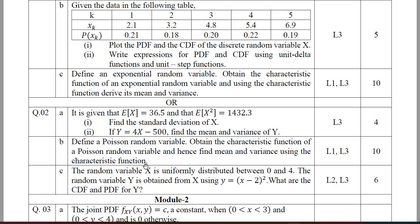All these problems are very simple compared to real mathematics, so you can easily answer them. For question 2C, the random variable X is uniformly distributed between 0 and 4. The random variable Y is obtained from X using the expression Y = (X − 2)². You are required to find the PDF and CDF for Y. That carries 6 marks.